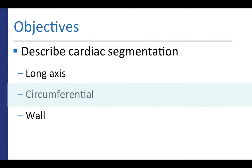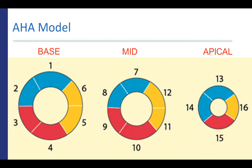Next, we'll move on to a description of circumferential segmentation. In the AHA model, basal and midventricular short axis slices are divided into six segments each. Apical short axis slices are divided into only four segments. The true apex corresponds to the 17th segment in this model.